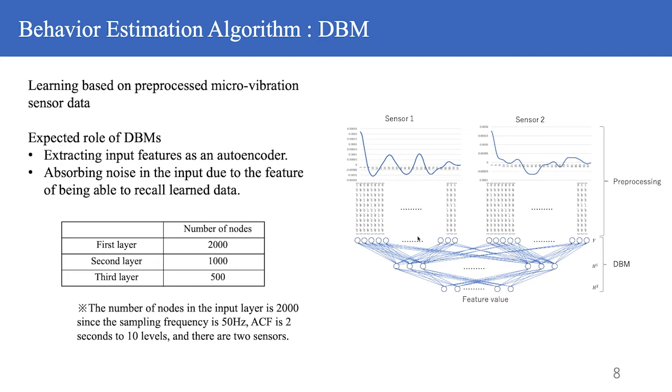Next comes the Deep Boltzmann machine. The expected role of the Deep Boltzmann machine in this system is to extract the input features as an autoencoder and remove noise from the input data due to its ability to recall the learned data.